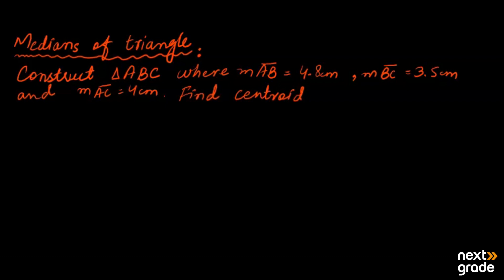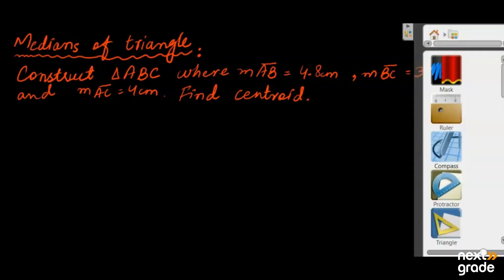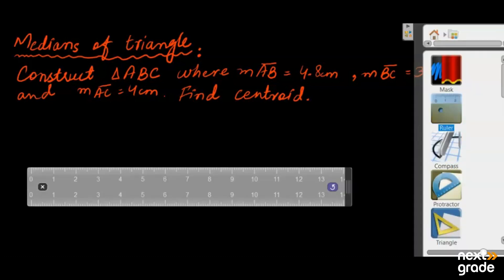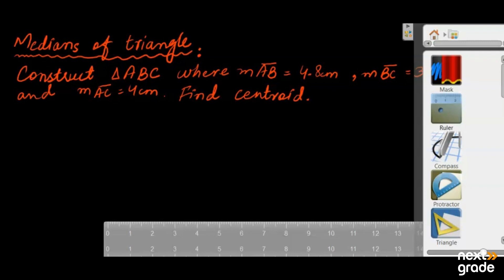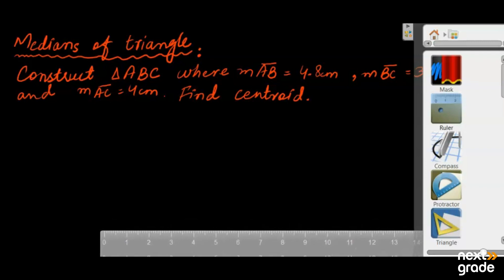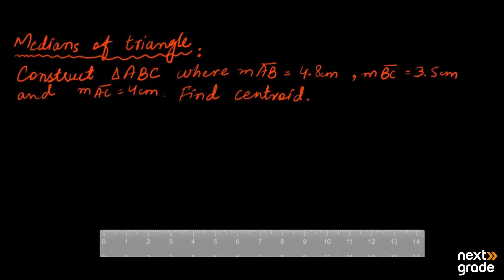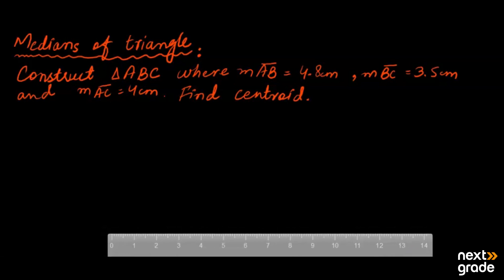The centroid can also be described as the point where the medians of the triangle meet. To find it, we draw the medians. The first step is to draw the shape. We consider the ruler and draw the base line. We have to consider the base using the three given measurements.